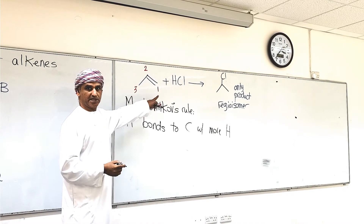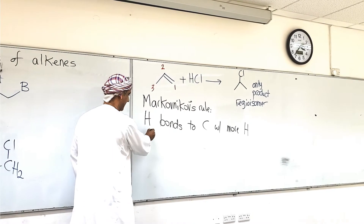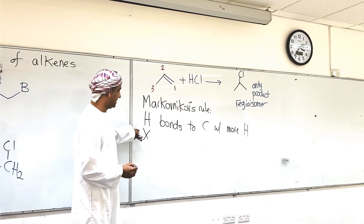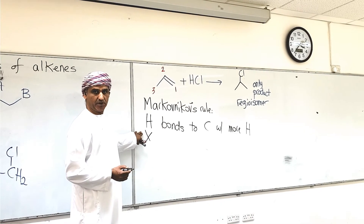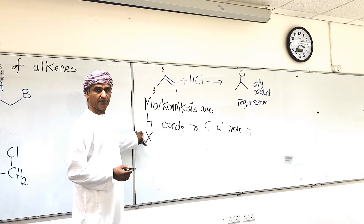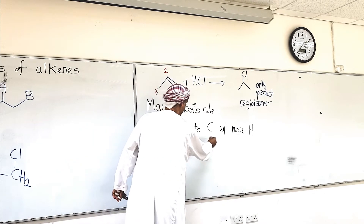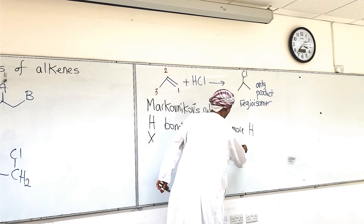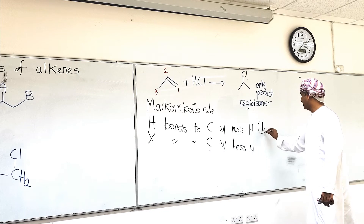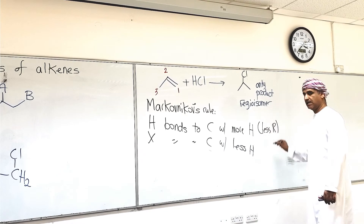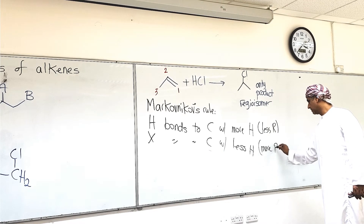H of HX bonds to the carbon of the carbon-carbon double bond with less alkyl substituents, and X of HX bonds to the carbon of the carbon-carbon double bond with more alkyl substituents, or less hydrogens — more hydrogens here, or less R, less alkyl groups.